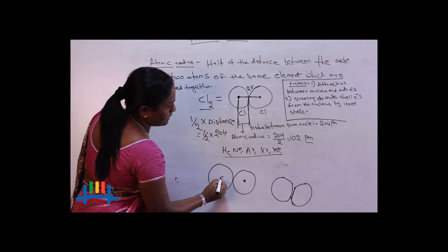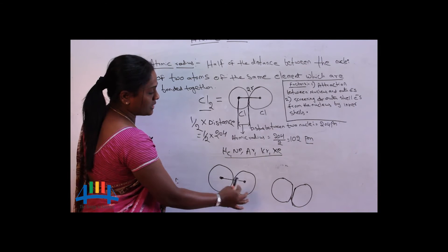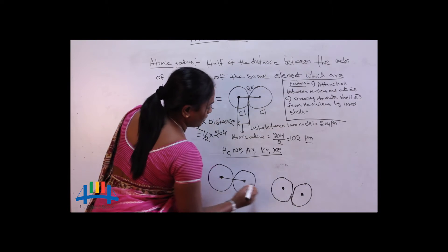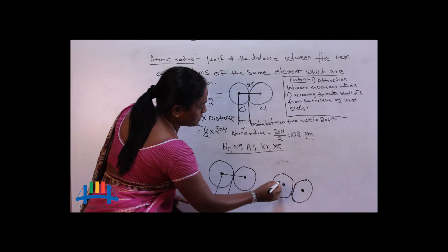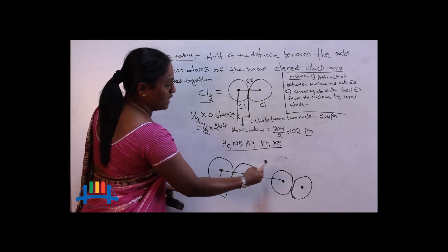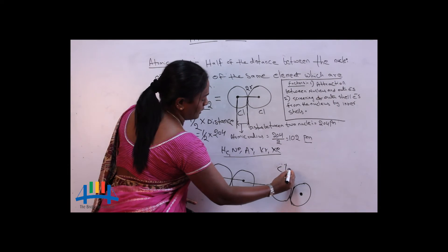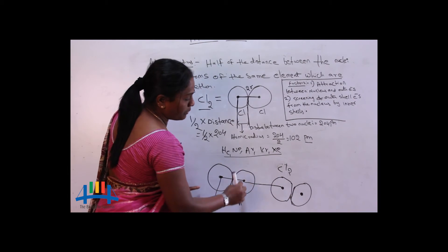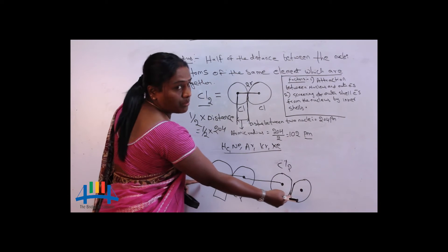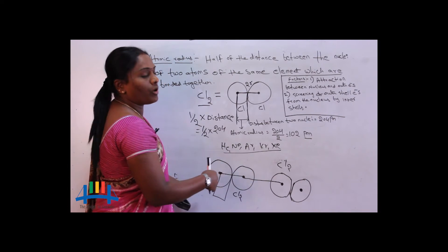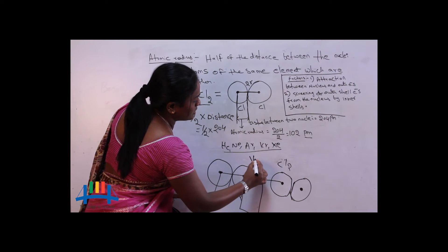This is one noble gas atom and this is another noble gas atom — these two are just touching each other without any strong attractive forces, only weak van der Waals forces. The distance between the two nuclei of two neighboring atoms is measured. For example, take two Cl₂ molecules placed next to each other. The distance between the nucleus of one molecule and the nucleus of the neighboring molecule — these two are not bonded with each other — that distance involves the van der Waals radius.